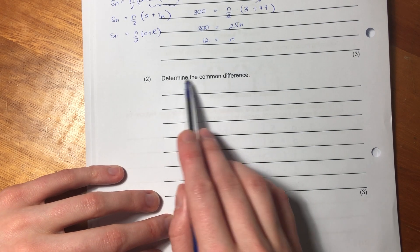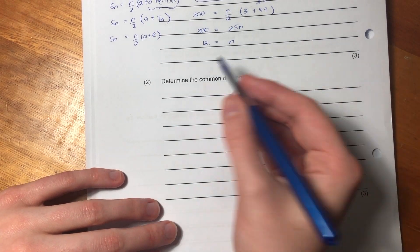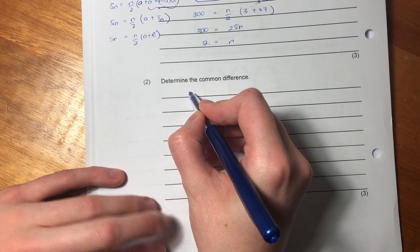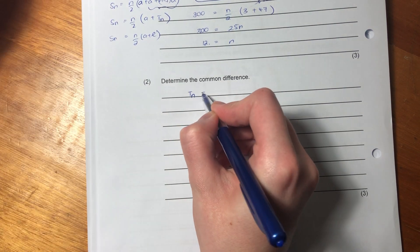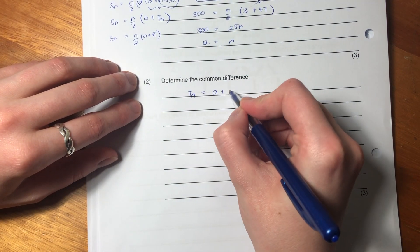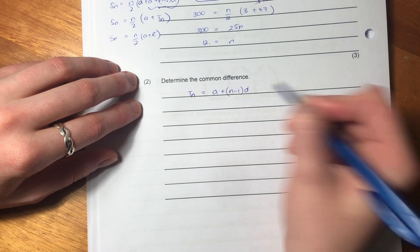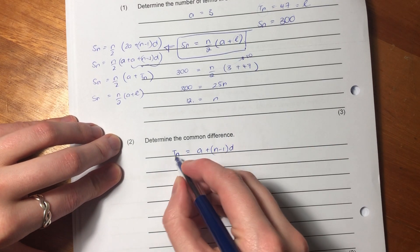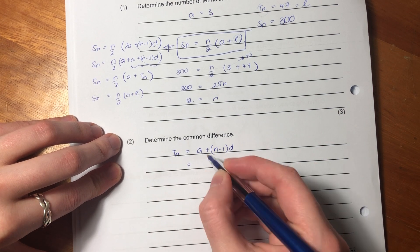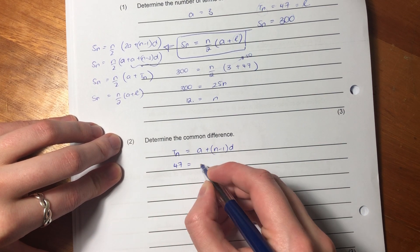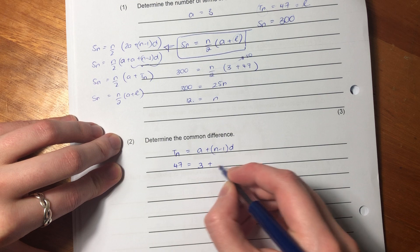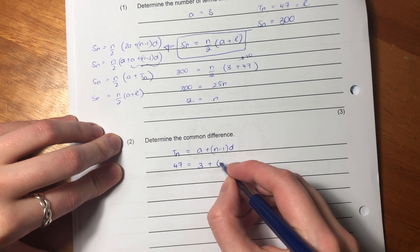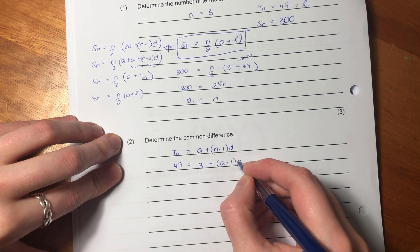So interestingly now, they say determine the common difference. Well, now we know that we can just use TN equals A plus N minus 1 D. So we know that our last term, we're going to use our last term here, is 47. Our first term is 3. Plus we know that this term is 12. And then we're going to make that D.